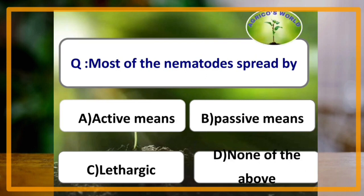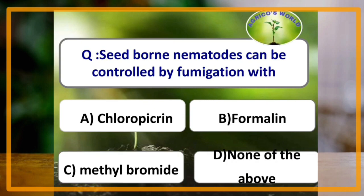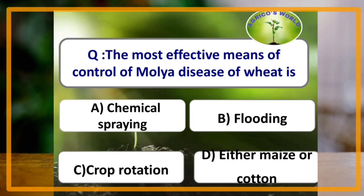Most nematodes spread by passive means. Seed-borne nematodes can be controlled by fumigation with methyl bromide. The most effective means of control of molia disease of wheat is by crop rotation.